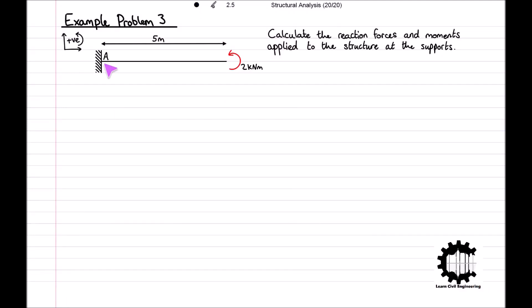For the final example, we have a structure supported only by a fixed support at point A. The structure has a length of 5m and its self-weight is negligible. Instead of a force, we have a moment of 2kNm applied in an anti-clockwise direction at the end of the structure. As the fixed support transmits forces and moments in any direction, at point A we have a horizontal reaction force, a vertical reaction force, and a reaction moment, as shown in the diagram.